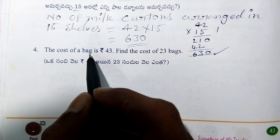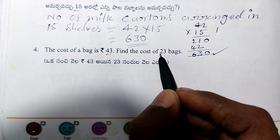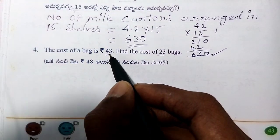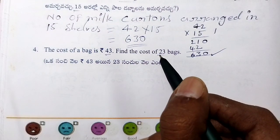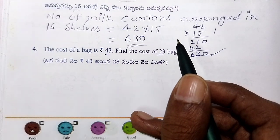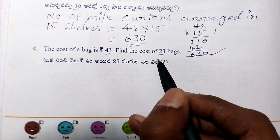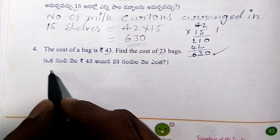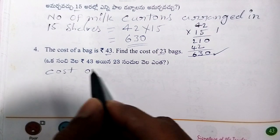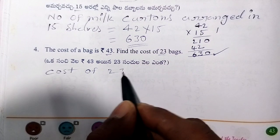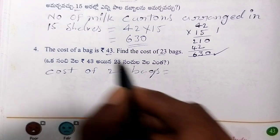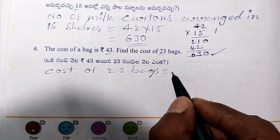Now, the cost of a bag is Rs.43. Find the cost of 23 bags. The cost of one bag is Rs.43. The number of bags is 23. Cost of 23 bags is equal to 43 into 23.